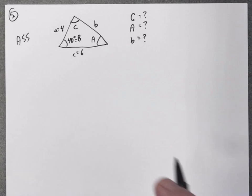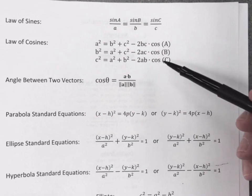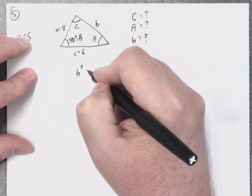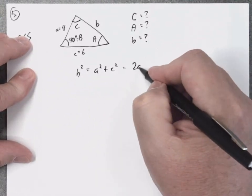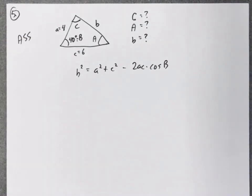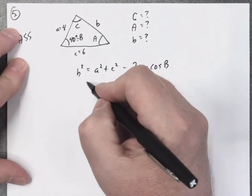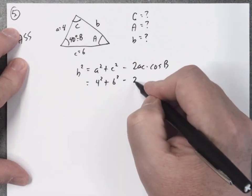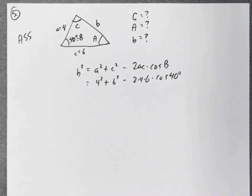We need the law of cosines form that involves angle B — that's the middle one. Using this, we can find the length of side B. I know side a, side c, and angle B, so I can fill in all the numbers: b squared equals a squared plus c squared minus 2ac cosine B. Side a is four, so four squared; side c is six, so six squared; minus two times four times six times cosine of 40 degrees.